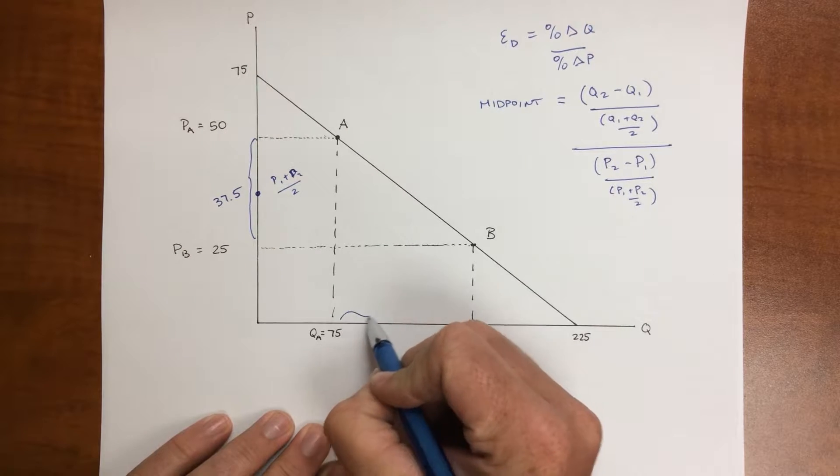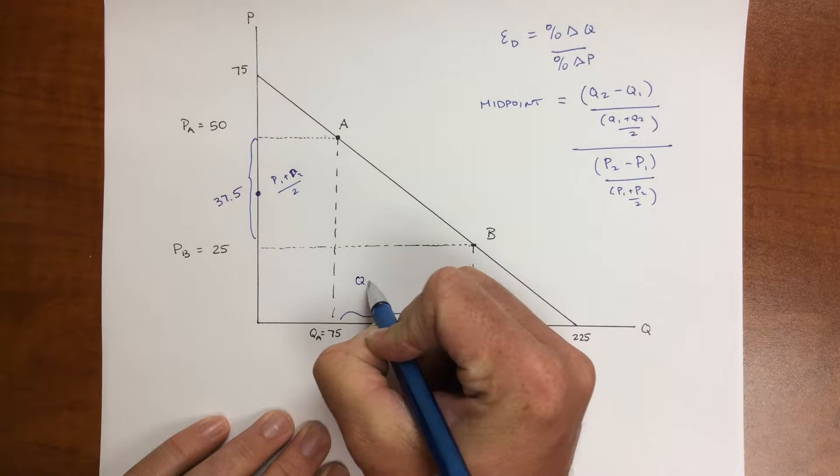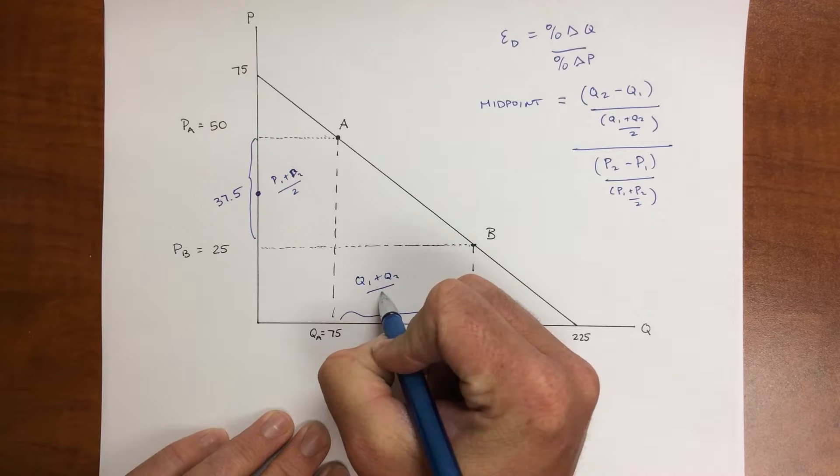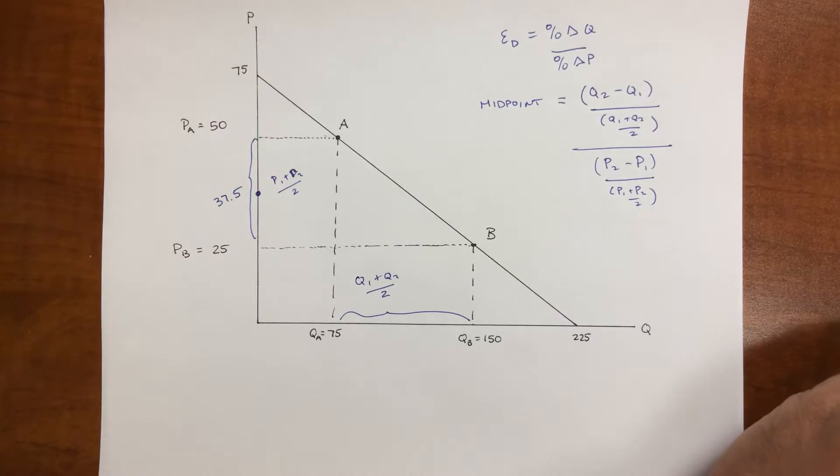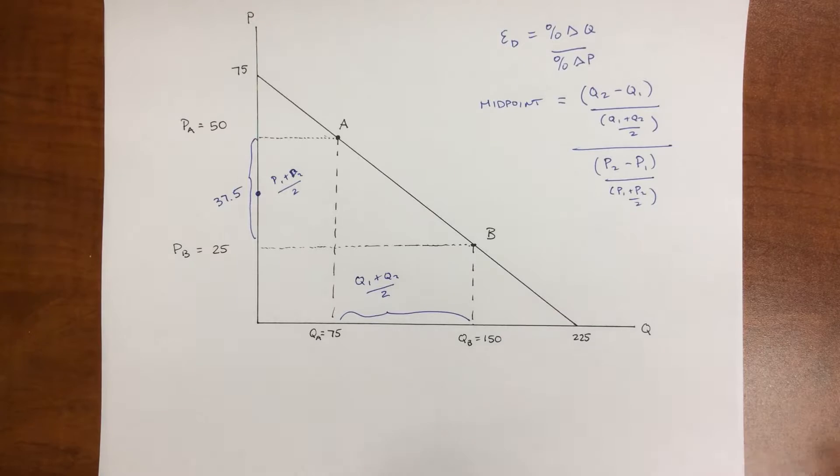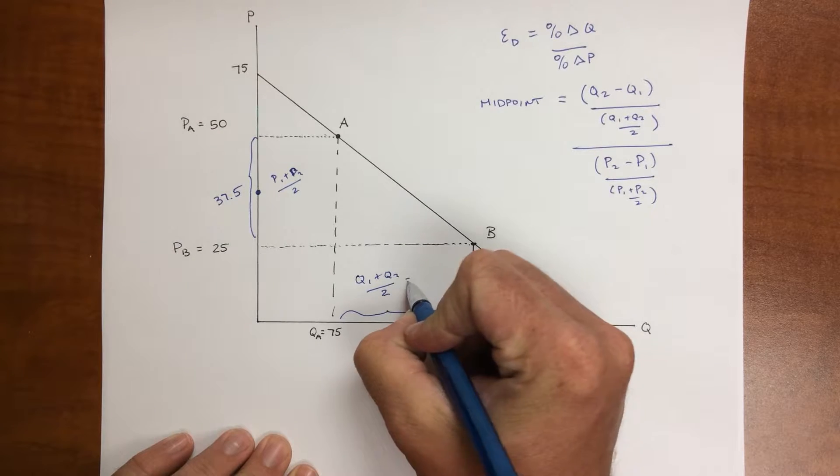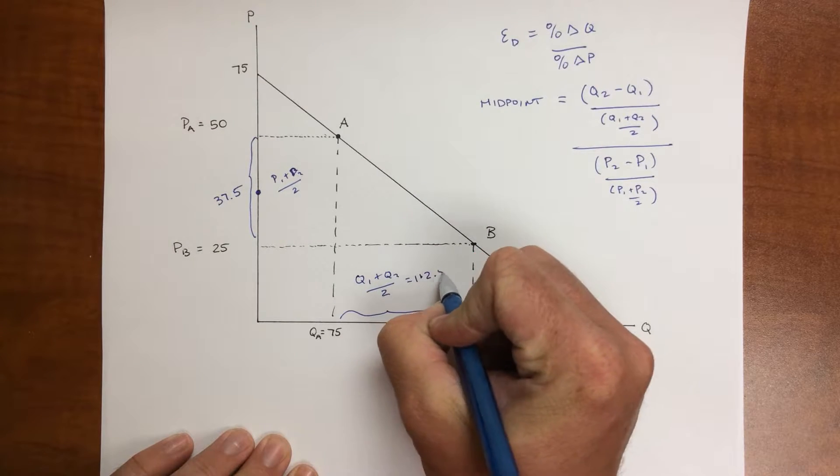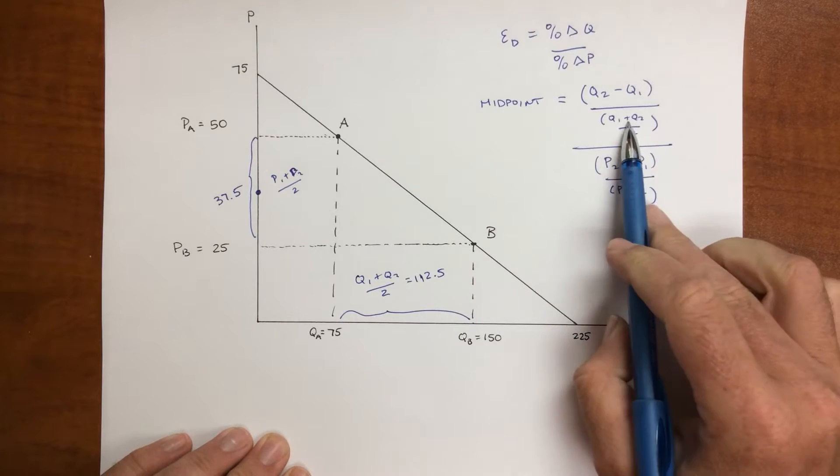To find the midpoint of the quantity, it's Q1 plus Q2 divided by 2. And so I get 225 divided by 2, which is 112.5. And that's this number right here.